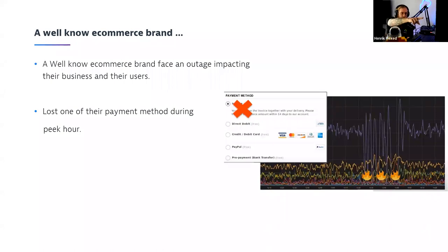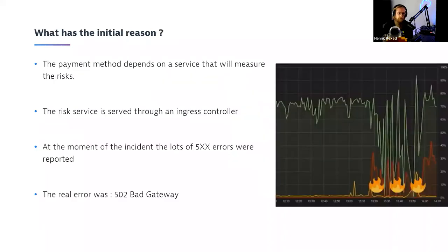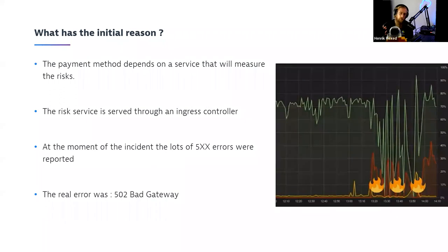Looking at the graph, the purple line shows the response times of the risk service — quite unstable. At certain states it was simply not responding. Checking the HTTP response codes, before the incident they were mainly 2xx, but during the incident there were a lot of 5xx — specifically 500 errors. Extracting statistics on the error code revealed a 502 — bad gateway — meaning something in front of that service, likely a proxy, was not doing its job properly.